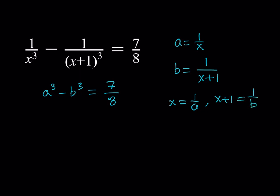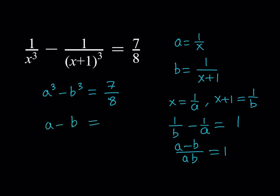Notice that the difference between x and x plus 1 is 1. So if I subtract them: 1 over b minus 1 over a equals x plus 1 minus x, which is 1. Let's make a common denominator — a and b are not supposed to be 0. Multiplying through gives a minus b over ab equals 1, which means a minus b equals ab.